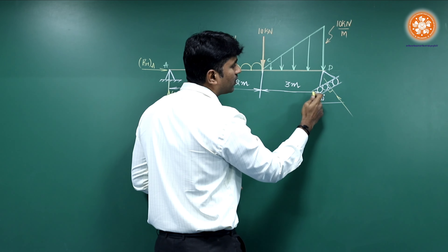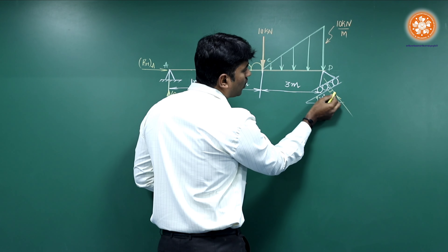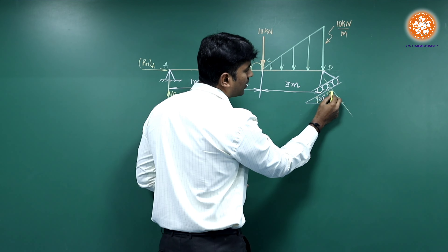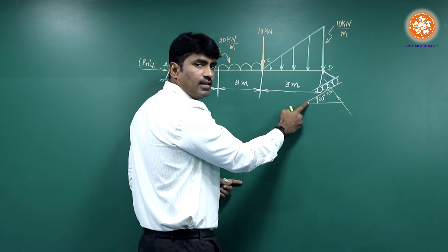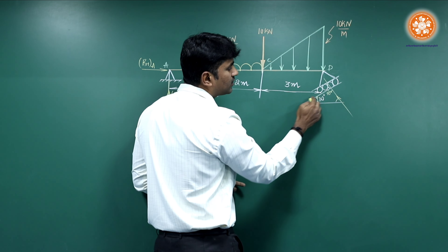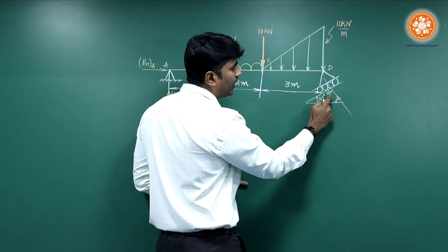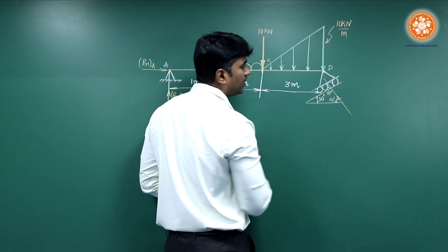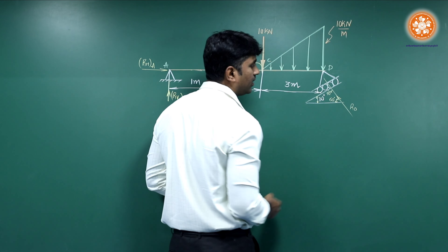I have explained this concept in the introduction class. This reaction is normal to the surface and towards it, so I write 90 degrees here. This entire roller is inclined at 30 degrees to the horizontal. Since this forms a triangle, this particular angle should be 90 minus 30, which is 60 degrees. Since it is at point D, I will call this Rd.